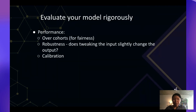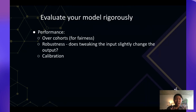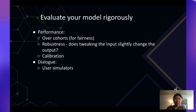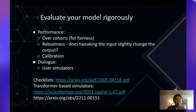A couple of last thoughts on closing: evaluation is really important. Evaluate over cohorts — for all the different subpopulations that might use your product in high-stakes environments, track performance metrics per cohort. Look at robustness as well as calibration: what is the correlation of confidence scores to how correct the model actually is? For dialogue systems, use user simulators. Here are some papers and works that could be interesting — happy to share in the chat later.